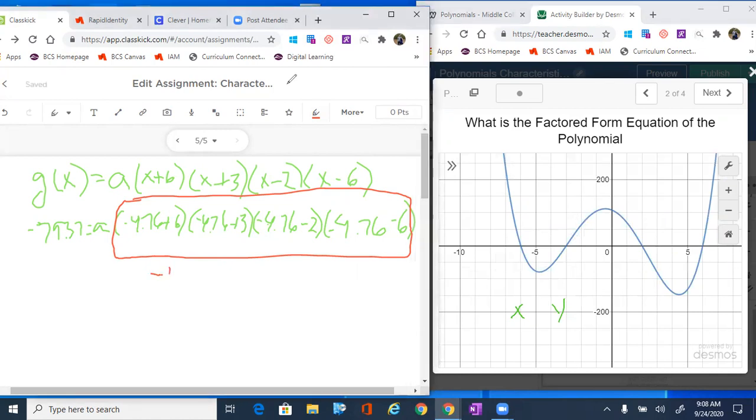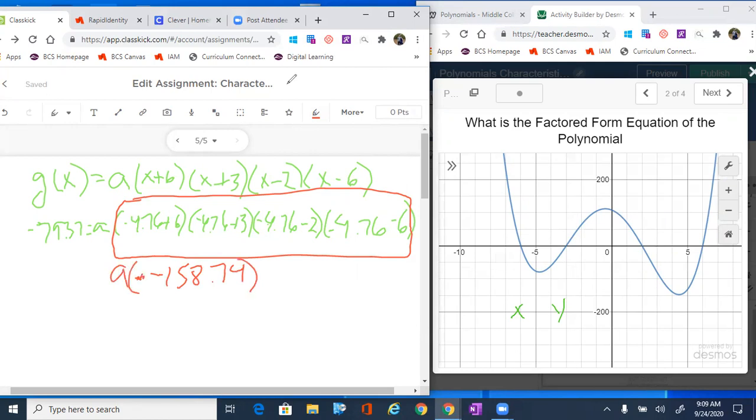So this becomes negative 158.74 times a. Put this in parentheses so we don't think it's subtraction—it's multiplication.